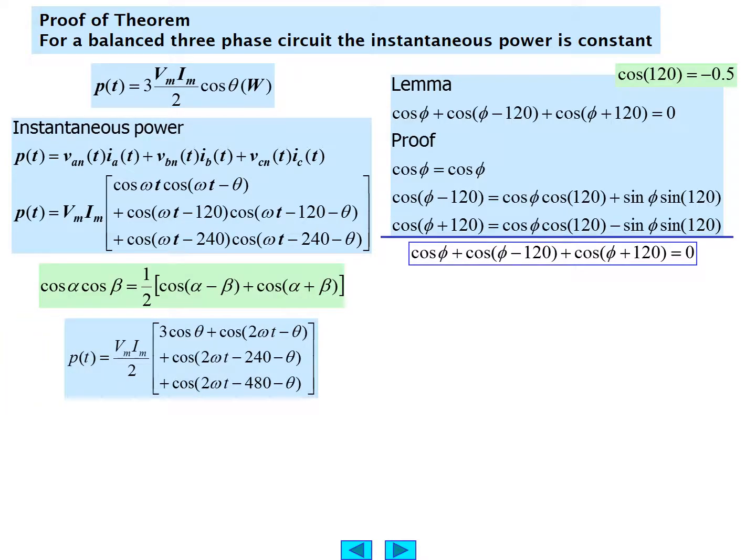So we can make that particular substitution for the product of two cosines, and P(t) then reduces to V_m I_m over 2 as a common factor. The terms of each of those factors would be three cosine theta plus cosine 2 omega t minus theta plus cosine 2 omega t minus 240 minus theta plus cosine 2 omega t minus 480 minus theta. You might want to make that reduction yourself just to prove the substitution of the trigonometric identity for cosine alpha cosine beta does produce that reduced equation for P(t).